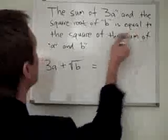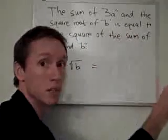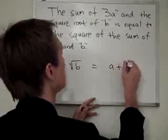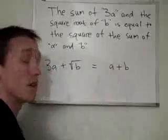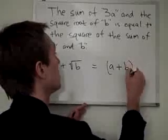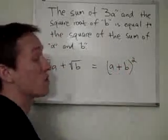Next we have is equal to the square of the sum of a and b. So the square of the sum. So what's the sum? Sum of a and b. A and b, that's the sum of a and b. The square of the sum of a and b is a and b squared. The square of the sum.